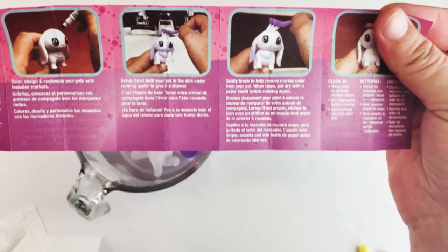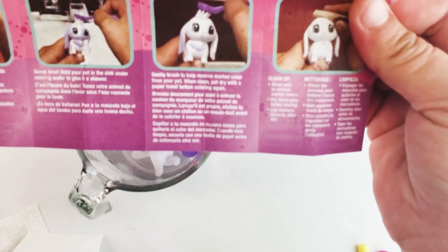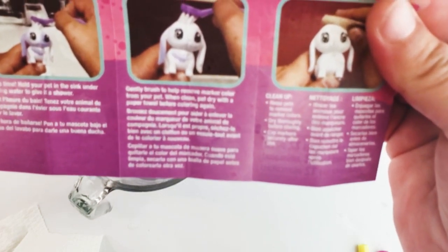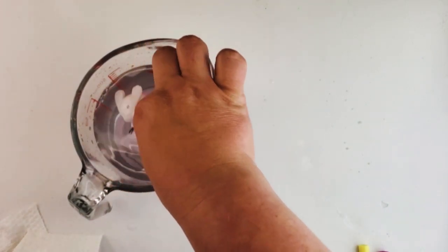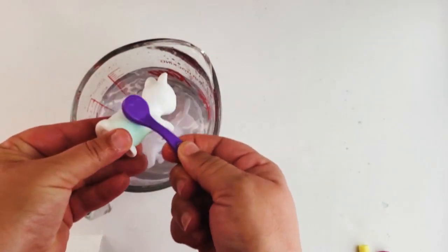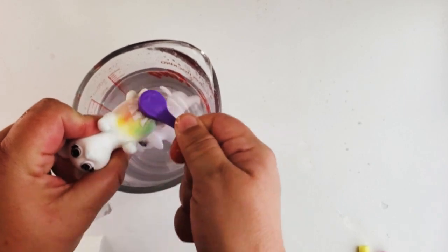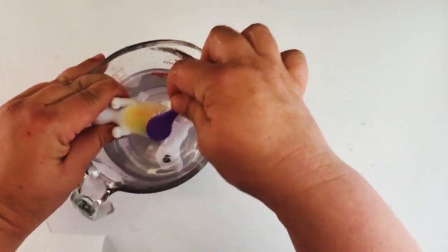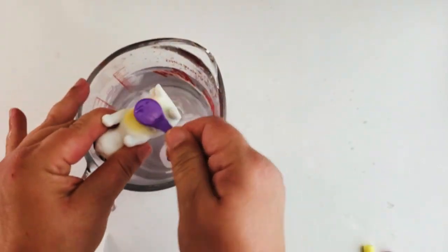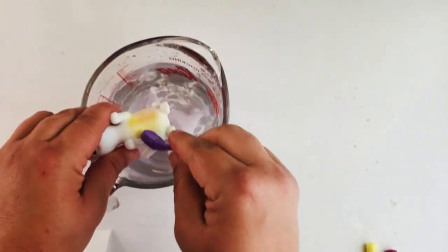So obviously I rushed it, but nowhere in these instructions does it say to let them soak. It says 'scrub time - hold your pet under the sink to give it a shower, gently brush to help remove the marker.' And then 'clean up - rinse pet to remove marker colors.' So it did not say you have to soak them. This time it's a fail on Crayola and not on me for not following instructions. Now that they've soaked, it's kind of interesting - the water's still really clear. The cat is not coming clean. The dog came clean. The cat is not coming clean. Look at it.